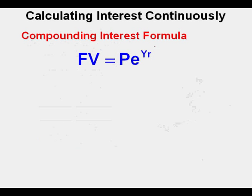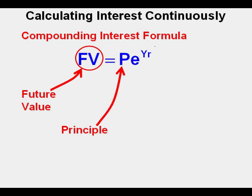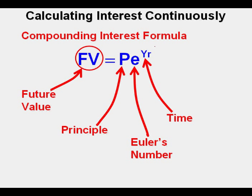We can use Bernoulli's discovery from about 300 years ago to find continuously compounded interest for different rates of interest. Here is the formula based on that discovery. FV stands for future value. P stands for the principal or initial amount. E stands for Euler's number, approximately 2.718. Y stands for time, usually years. R stands for rate.